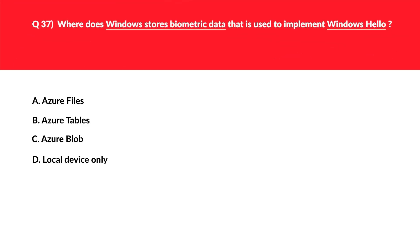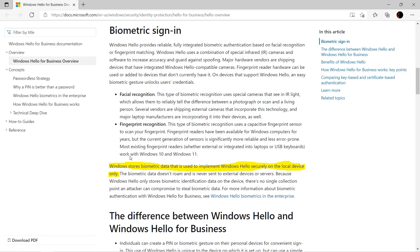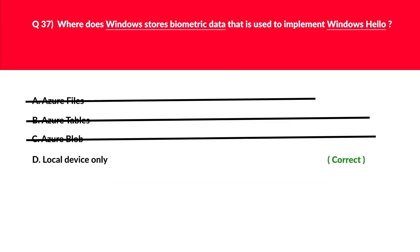This question is related to Windows biometrics and it's related to Windows Hello — a very interesting topic included in the latest syllabus. Options A, B, and C — Azure Files, Azure Tables, and Azure Blob — are all cloud-based. Biometric data is never sent to an external device or servers. Only option D, local device only, is the odd one out. The official documentation states: 'Windows stores biometric data that is used to implement Windows Hello securely on the local device only.' We'll log D as the correct answer.